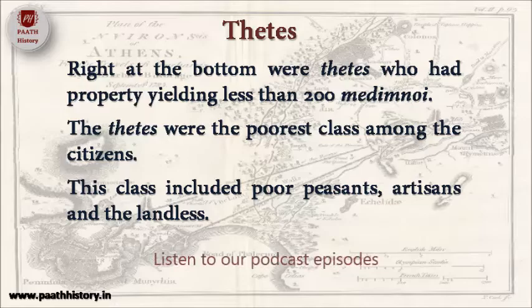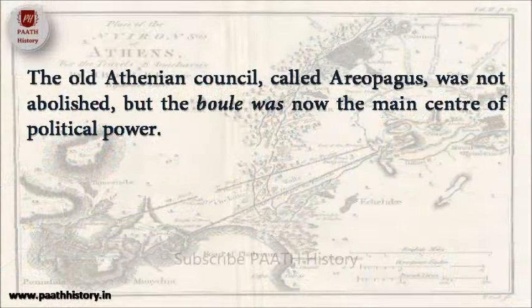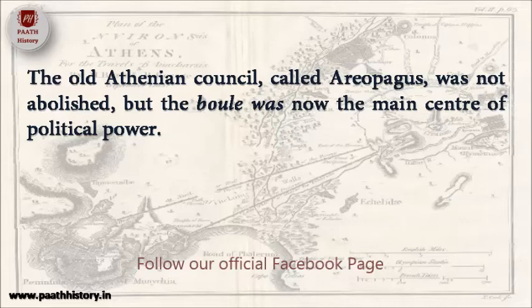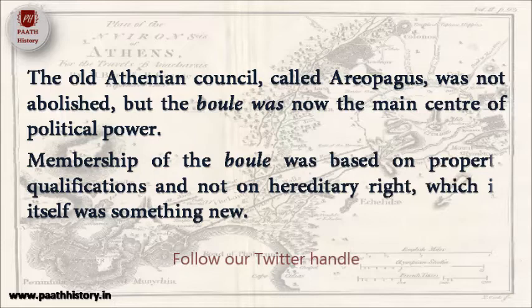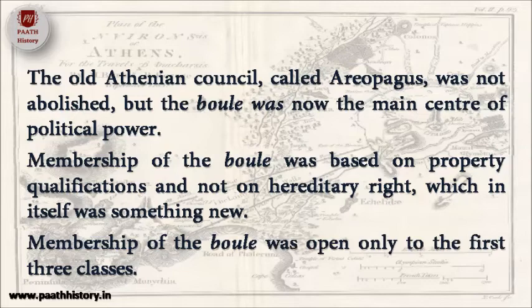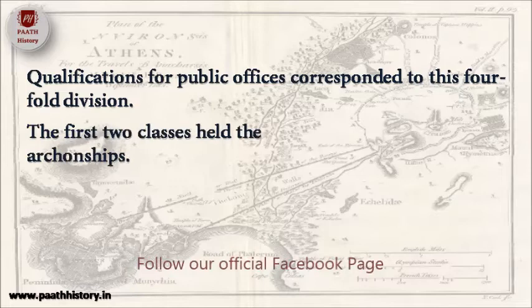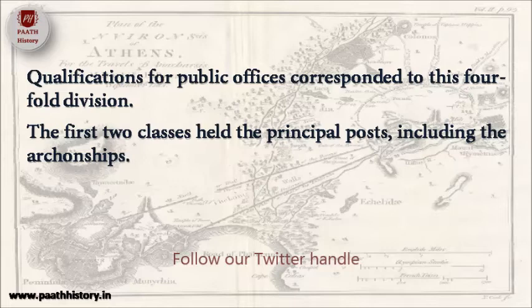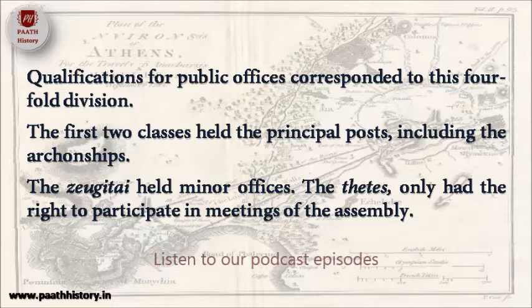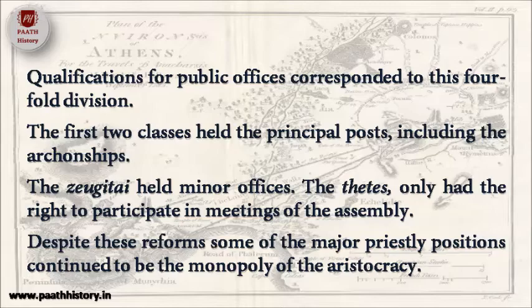Solon constituted a new council of 400 members, called the Bole. The old Athenian council called Areopagus was not abolished, but the Bole was now the main centre of political power. Membership of the Bole was based on property qualifications and not on hereditary right, and was open only to the first three classes. The first two classes held the principal posts including the Archonships. The Zeugitai held minor offices, and the Thetis only had the right to participate in meetings of the assembly. Despite these reforms, some major priestly positions continued to be the monopoly of the aristocracy.